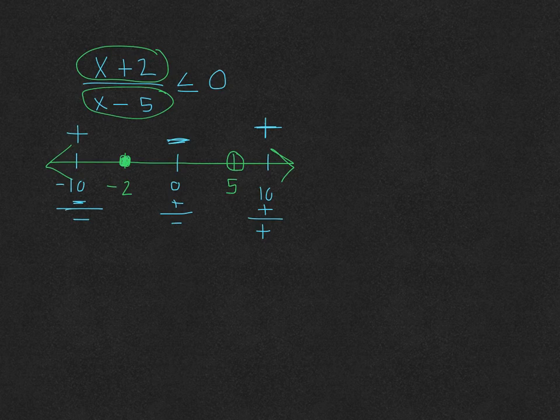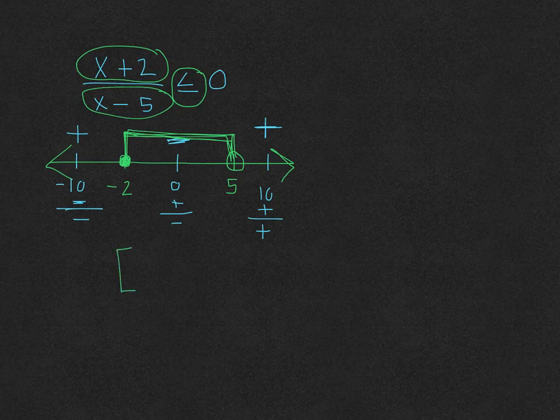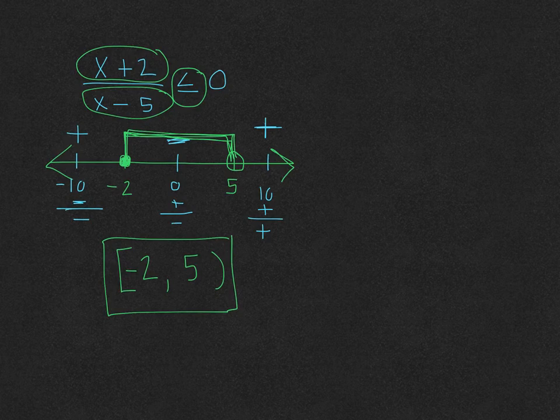So we have here that we want the values less than 0. Less than 0 means negative numbers. So the region where there are negative numbers would be this one right here in between negative 2 and 5. So the final answer would be written in interval notation. I can be equal to negative 2, but I cannot be equal to 5. And there is the final answer.